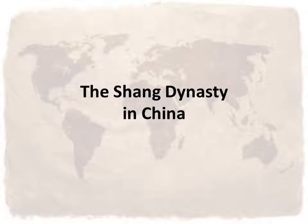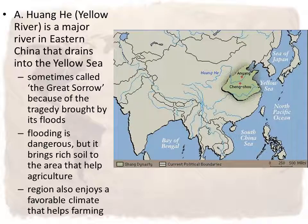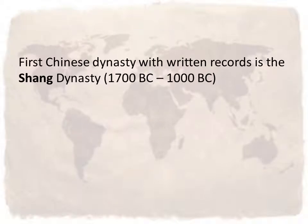Now we're going to move on to the second civilization, the Shang Dynasty in China. One of the main rivers that gave life to the Shang Dynasty was called the Huanghe, or the Yellow River — a major river in eastern China that drains into the Yellow Sea. This river is sometimes called the Great Sorrow because of the tragedy brought on by its floods. The flooding is dangerous, but it brings rich soil that helped with farming and agriculture. The region also enjoys a favorable climate for farming. A lot of historians start the history of China with the Shang Dynasty around 1700 B.C., because they're the first dynasty with written records, and they lasted until 1000 B.C.